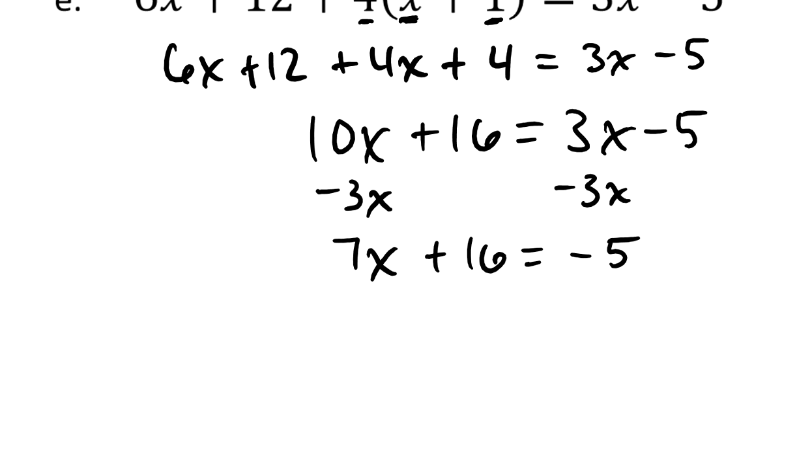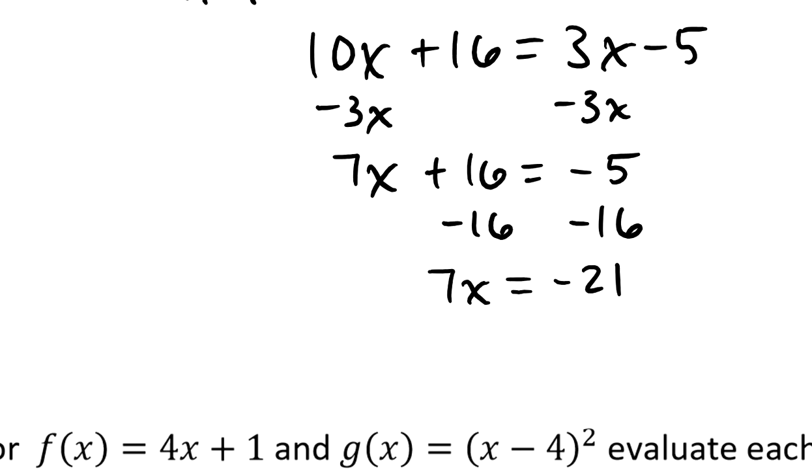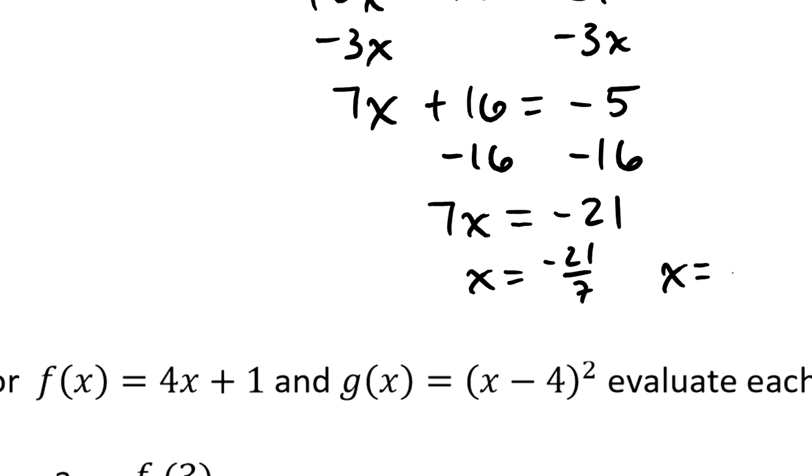That leaves a 10x minus 3x is 7x plus 16 equals negative 5. I'm going to subtract 16 from each side. And when I combine 5 and negative 16, I end up getting negative 21. So 7x is negative 21. And therefore, when I divide by 7, we get that x is negative 21 sevenths, which is the number negative 3. So x is negative 3.